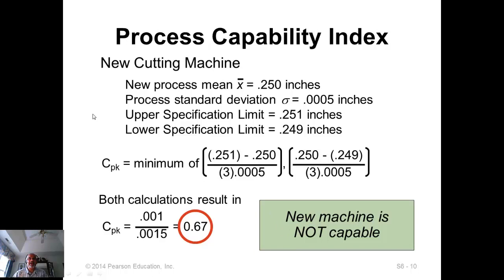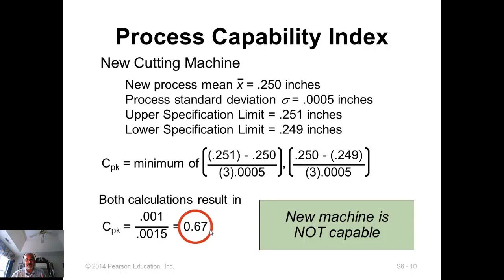The process capability index also checks for the target value, whereas C sub p tests only for variance. When you know the process is not capable, you have two things to check. First, check whether the process variance is small enough. If you compute C sub p and it turns out to be 1.4 or something like that, then the variance is small enough and the reason for the low C sub pk is centering. But if C sub p turns out to be 0.9 or even 1.2, which does not meet the 1.33 threshold, then the process variance must be reduced. Make process changes to reduce the variance, then check for process capability again.